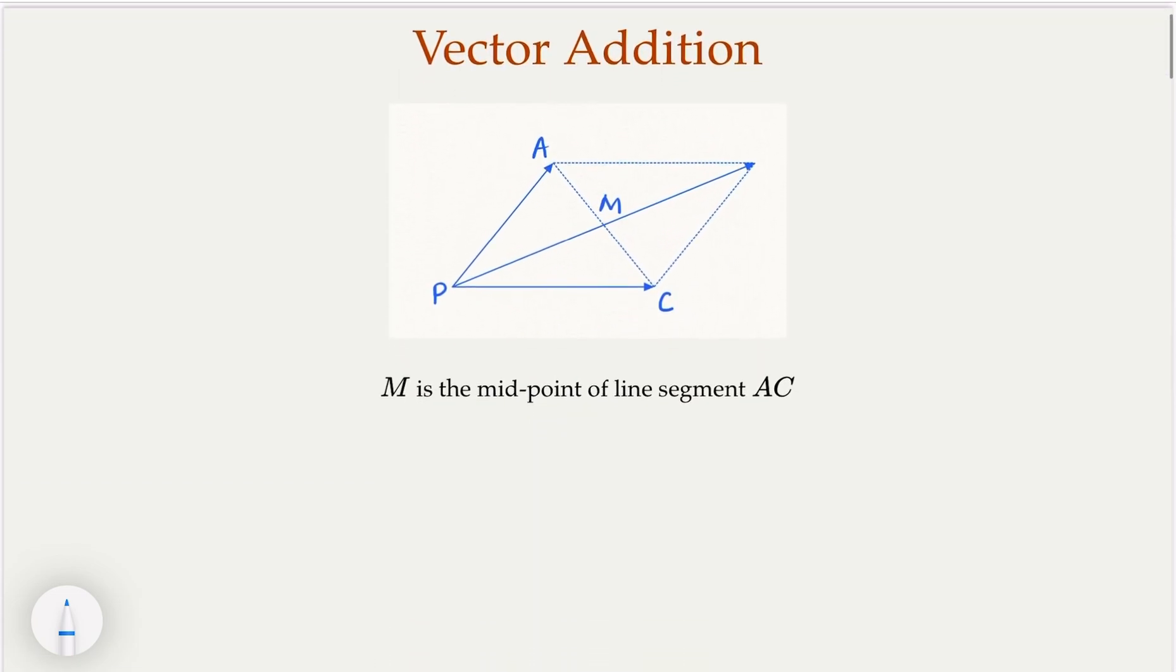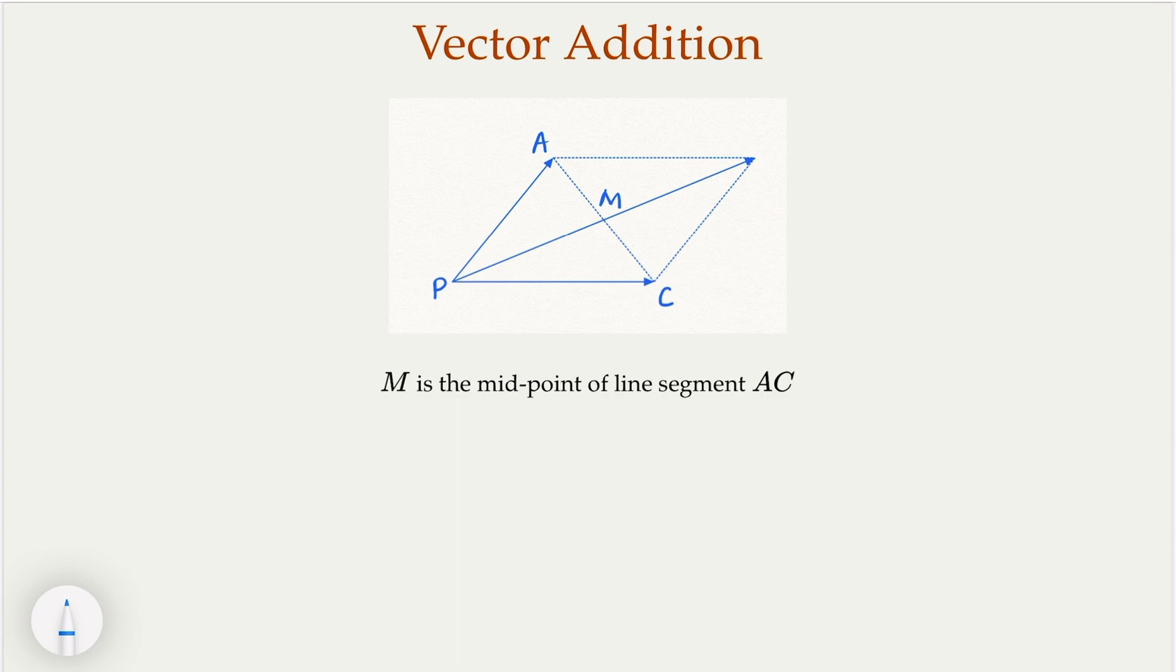It's good to review the vector addition, what it means. Now, here I have a diagram to illustrate PA vector plus PC. In this case, that would be the sum. The sum is PA vector plus PC vector. Notice that if I connect AC and choose a midpoint here, M is a midpoint. Notice that this is equal twice of PM. We're going to use this fact. If you're not familiar with this, maybe you're going to review the definition of vector and vector addition.